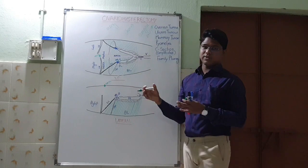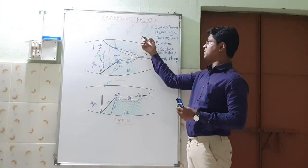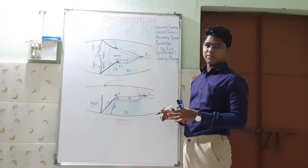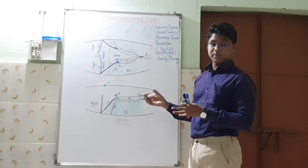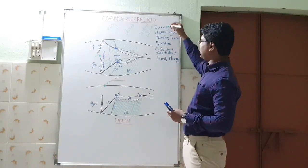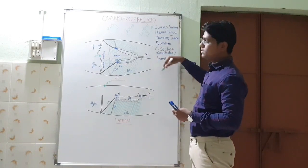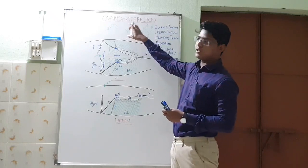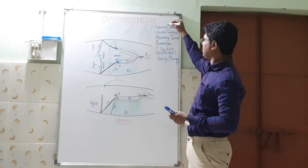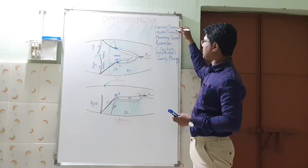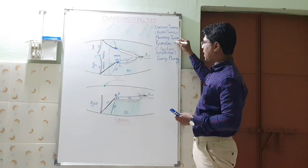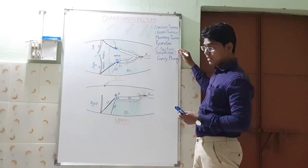Any word with -ectomy means surgical excision. Mastectomy is removal of mammary tissue. Splenectomy is removal of spleen. Now, these are the conditions in which ovariohysterectomy is a radical or optional treatment: ovarian tumour, uterine tumour, mammary tumour, pyometra, and C-section.